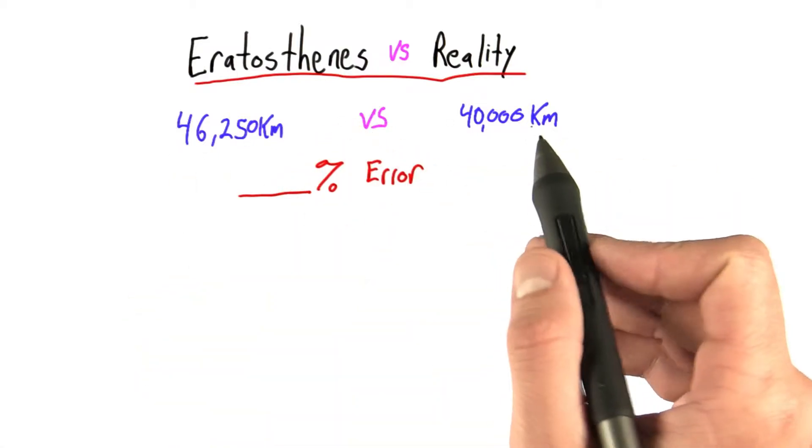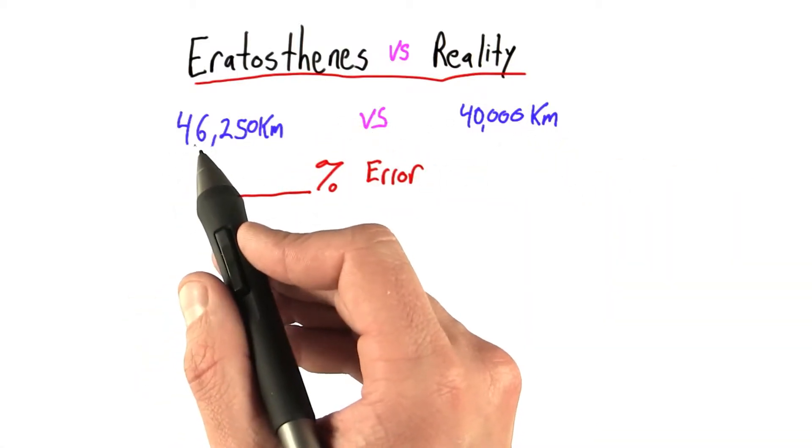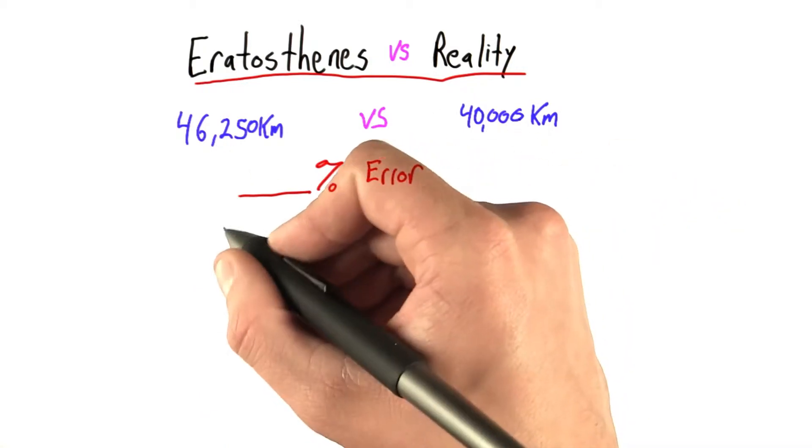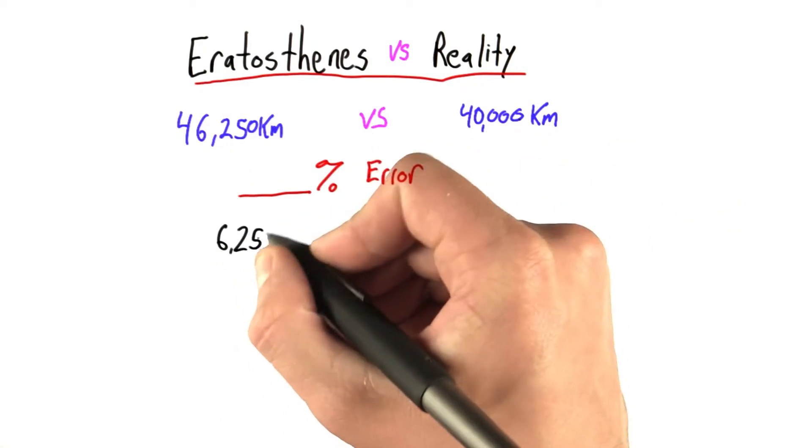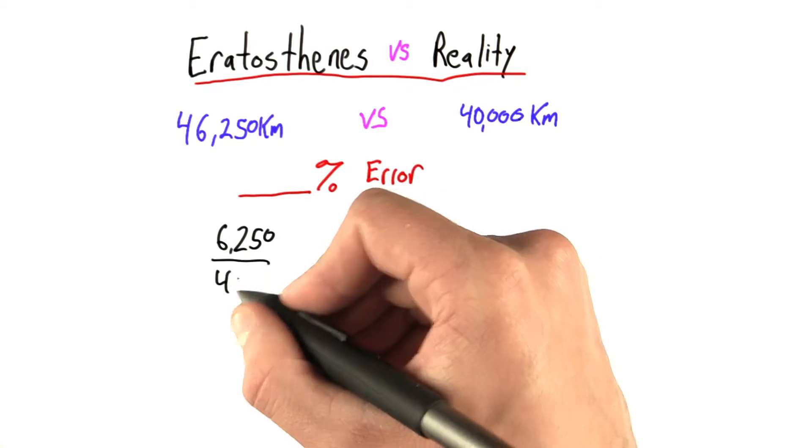We compute the difference here, which is 46,250 minus 40,000, or 6,250 over 40,000.